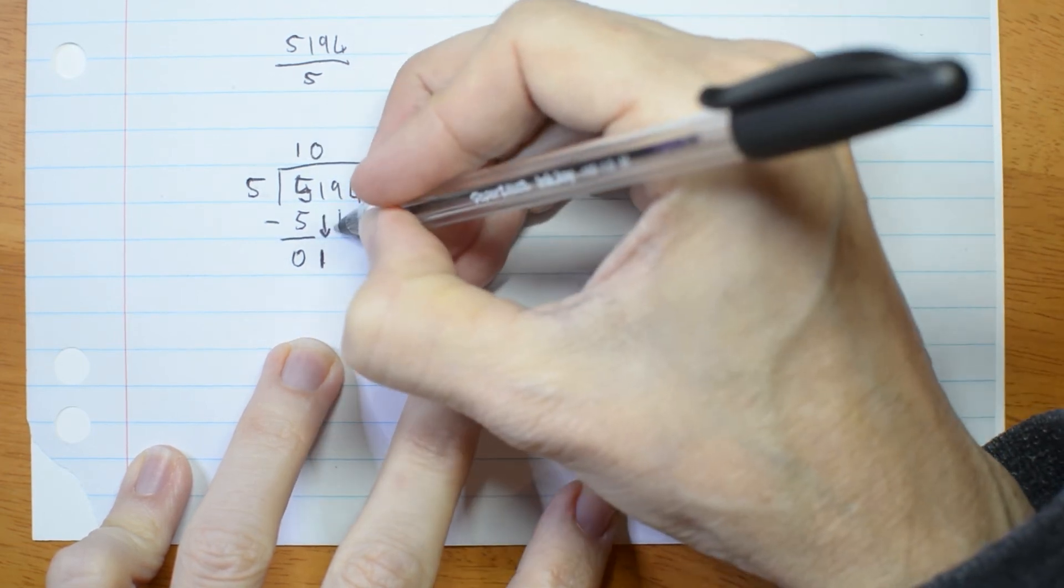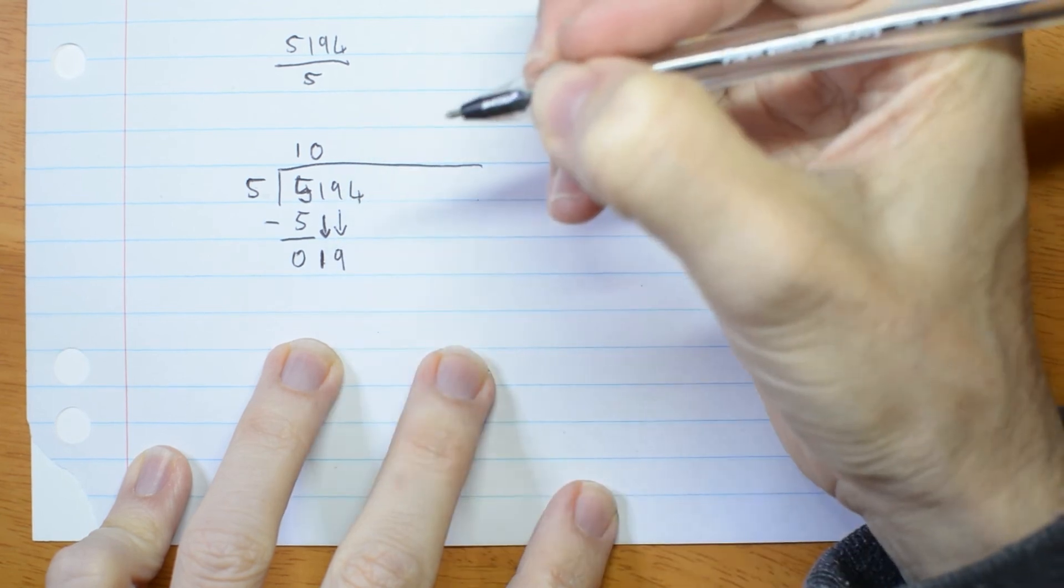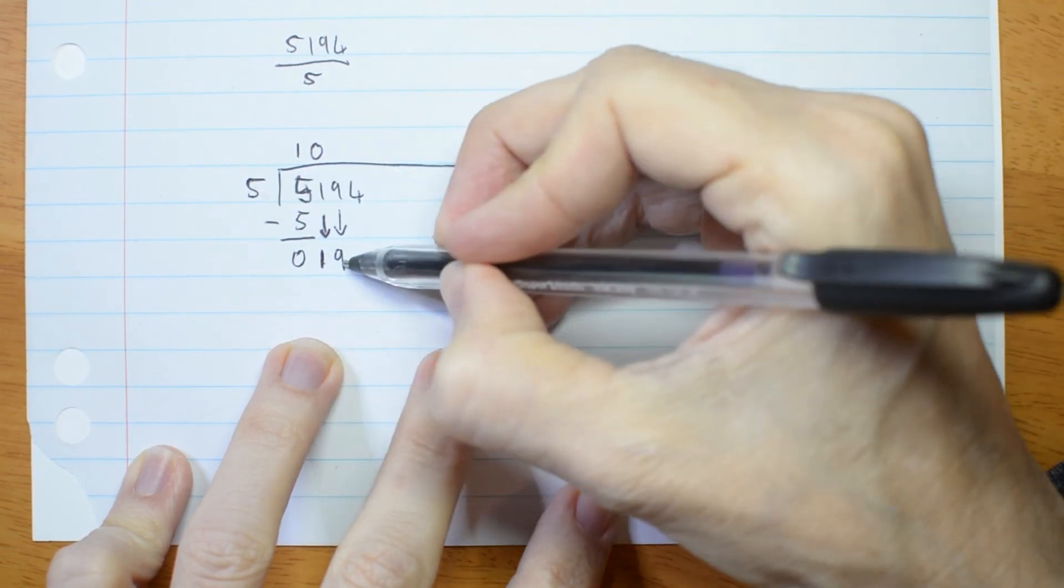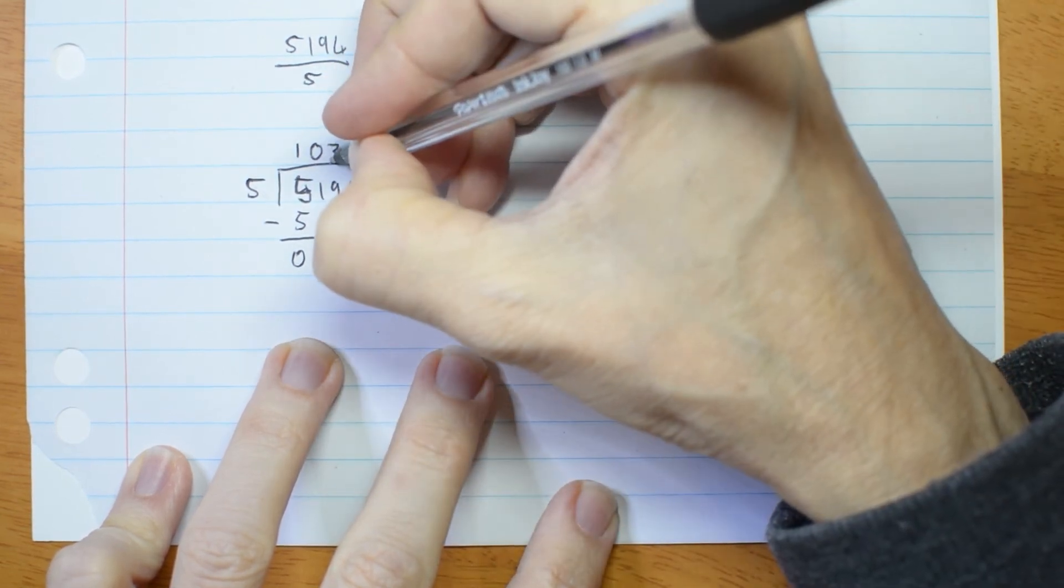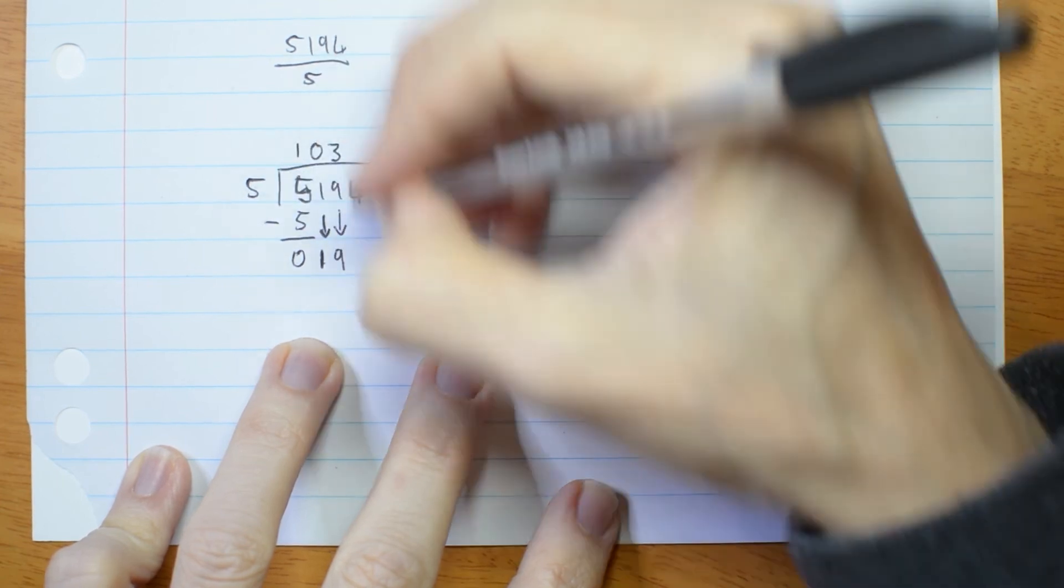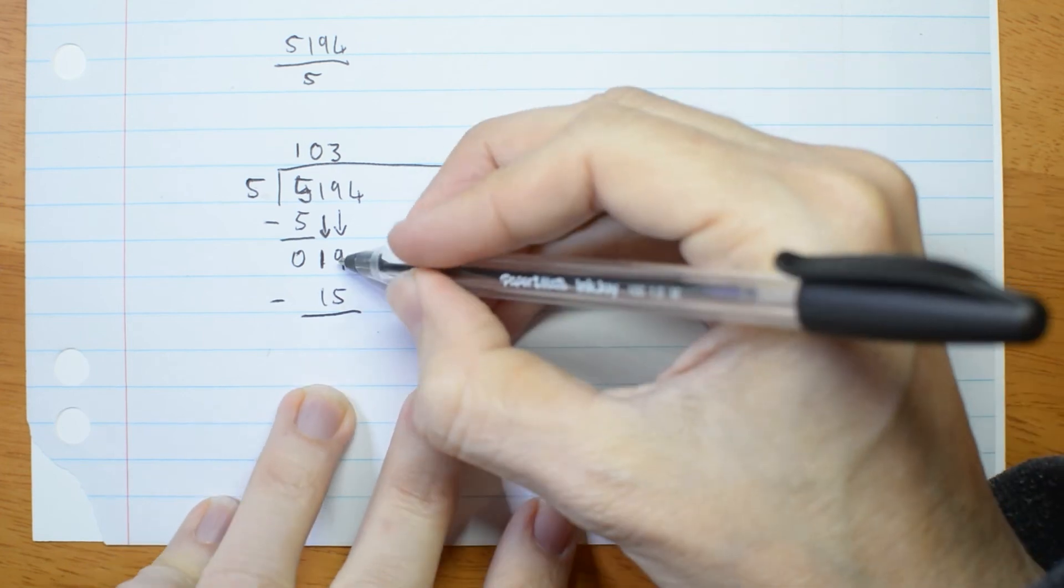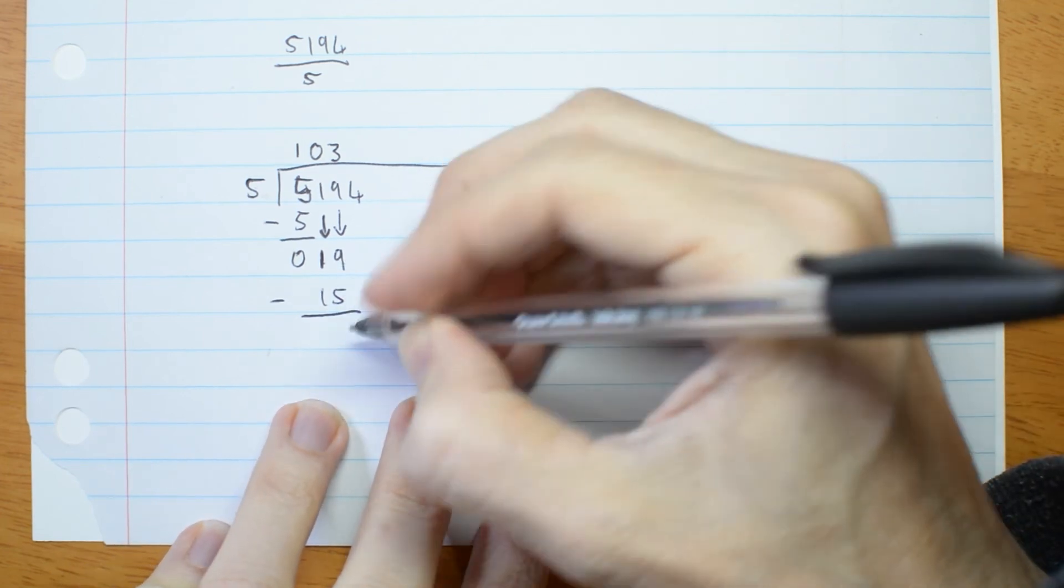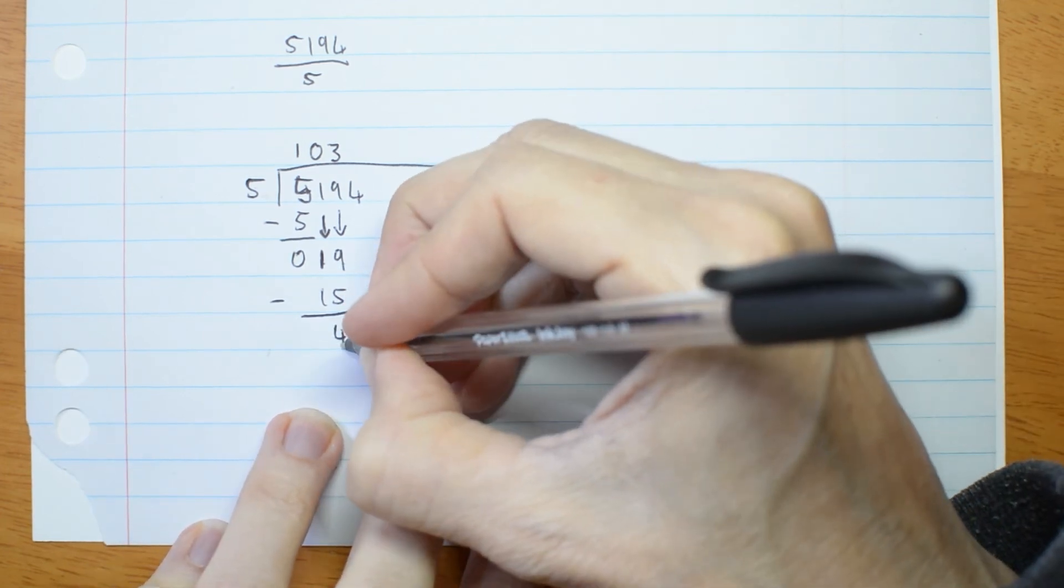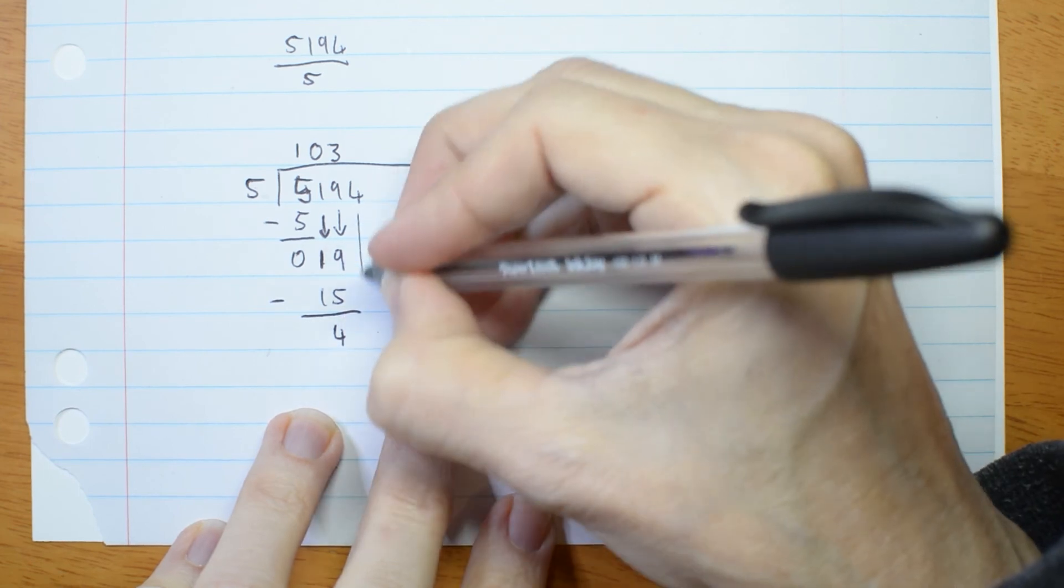So I'm going to bring down another digit. 5 goes into 19, 3 times. 3 times 5 is 15. Subtract. 19 take 15 leaves me with 4. Bring down the next digit.